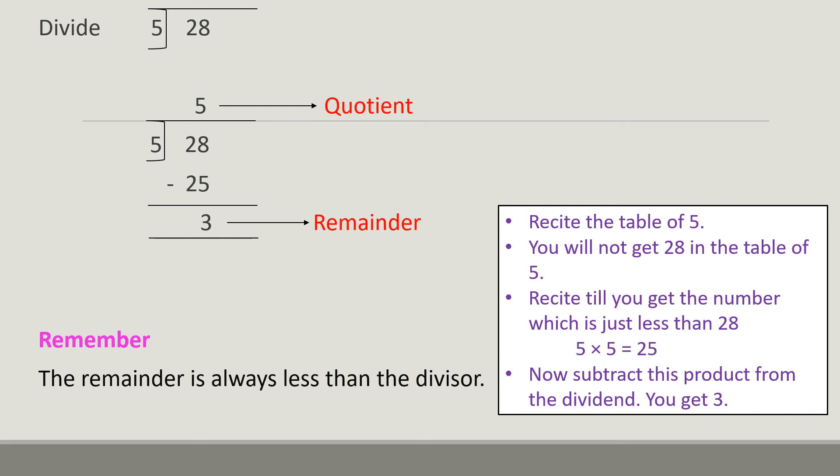First of all, recite the table of 5: 5 ones are 5, 5 twos are 10, 5 threes are 15, 5 fours are 20, 5 fives are 25, 5 sixes are 30. So 30 we can't write here. You will not get 28 in the table of 5, so recite till you get the number which is less than 28. So 5 fives are 25.